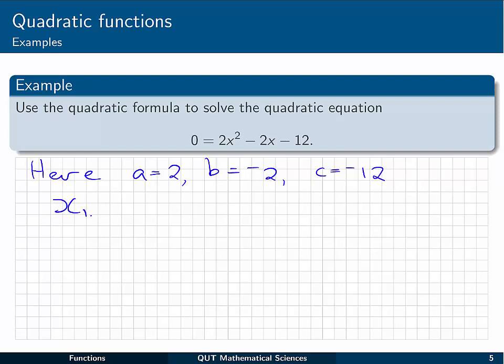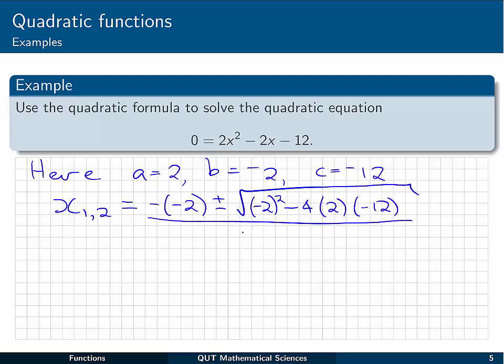So we'll find that the two x values, if there are two, will be equal to minus b, which will become 2 in a moment, plus or minus the square root of b squared minus 4 times a times c. We need to divide all of that by 2 multiplied by a. So pause the video now, just give yourself a quick bit of practice of simplifying that, and see if you come up with the same as me.